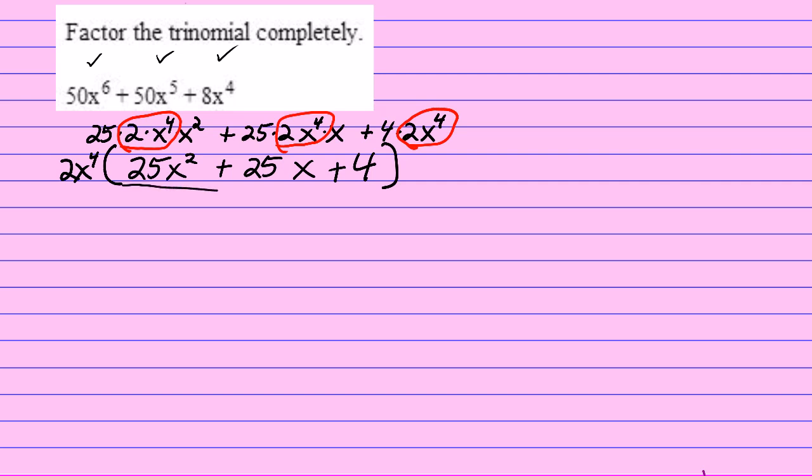This right there, 25x squared plus 25x plus 4, is a quadratic trinomial. Now I'm going to factor that, what's in the parentheses, I'm going to factor that by grouping. Here we go.